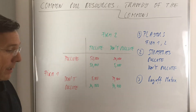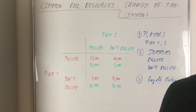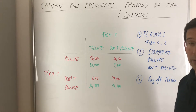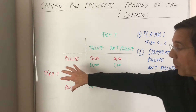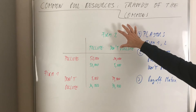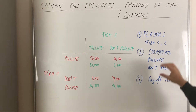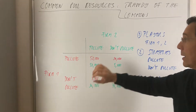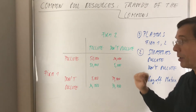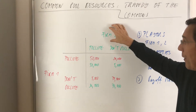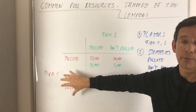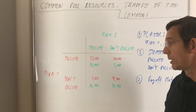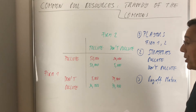So how do you read that payoff matrix? How do you come to the Nash equilibrium — the best response given the strategies of the other player? Player 1 is firm 1, player 2 is firm 2. That's the game. These are the strategies, and we want to find the best response of firm 1 given the strategies of firm 2, and the best response of firm 2, and we end up in a strategically dominant equilibrium and a Nash equilibrium.